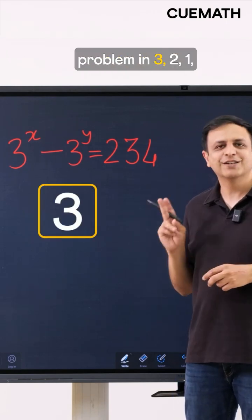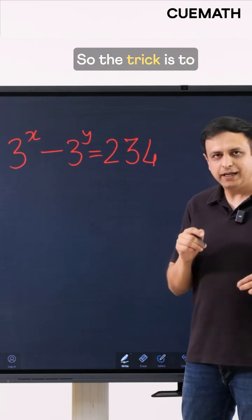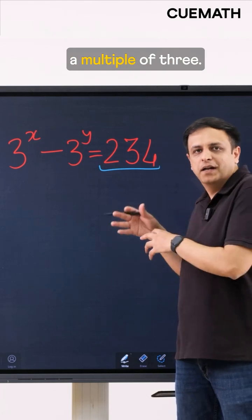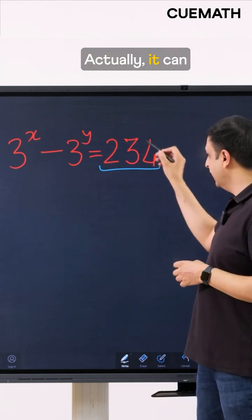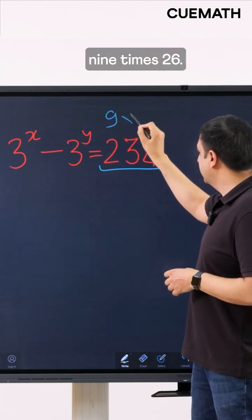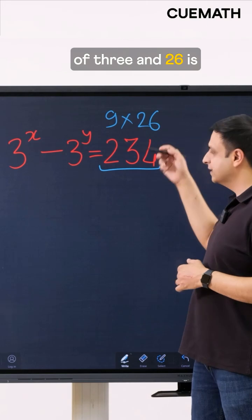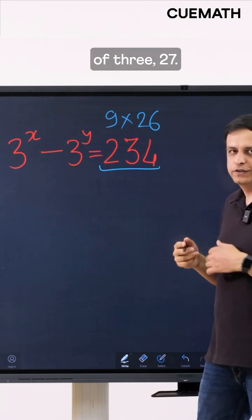I will solve this problem in 3, 2, 1 and here we go. The trick is to observe that the right side 234 is actually a multiple of 3. It's a multiple of 9 actually. It can be written as 9 times 26. So 9 is a power of 3 and 26 is 1 less than a power of 3, 27.